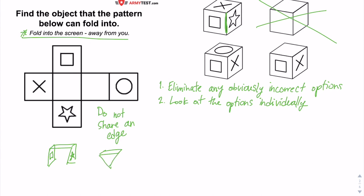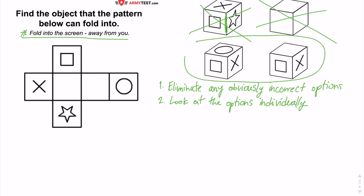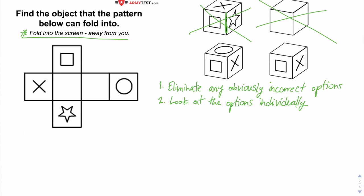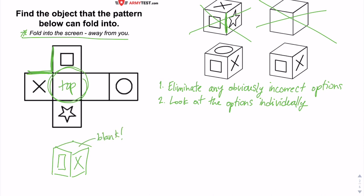They would need to be connected by a whole other face, so that option is not the right answer. Now looking at the remaining two options, the difference is the top face — one has a circle and one is blank. If we fold it so the square and x are beside each other, folding along that edge, the top face turns out to be blank. So the option with the blank top face is the correct answer.